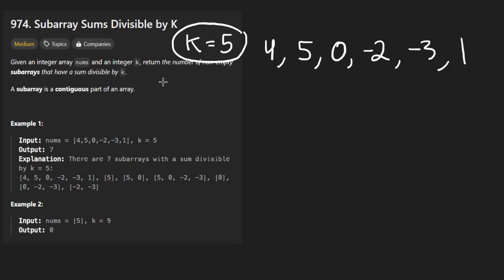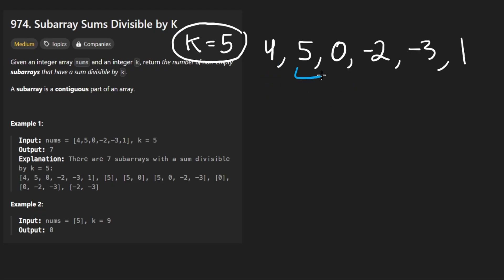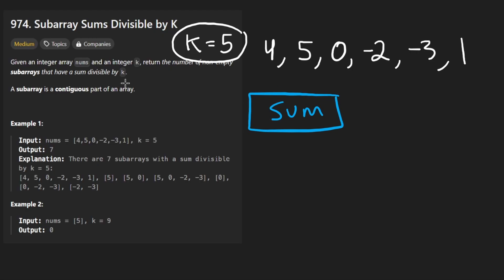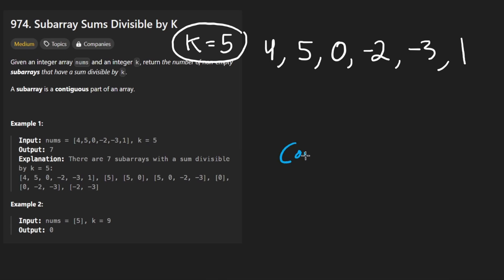So brute forcing it: how many subarrays does an array have? Roughly n squared. We have n subarrays starting with the first element, n minus one starting with the second element, etc. We could compute the sum of every single subarray and then check if it's divisible by k by modding it by k. If the result is equal to zero, we count it. After totaling up the count, we return it.